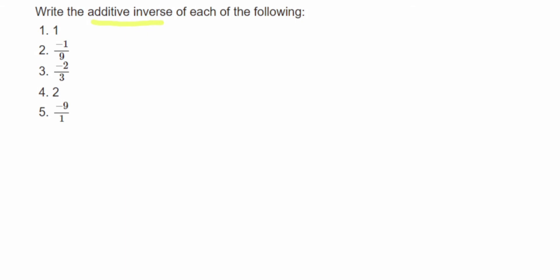Additive inverse means suppose I have a rational number like 2 by 3, what should I add here to get 0? So the additive identity is 0, so we have to make sure what we're supposed to add to get the answer 0.